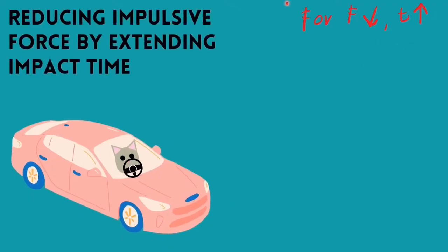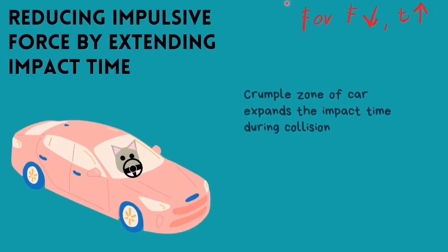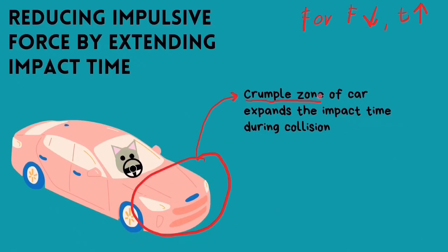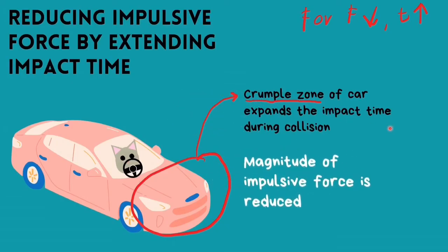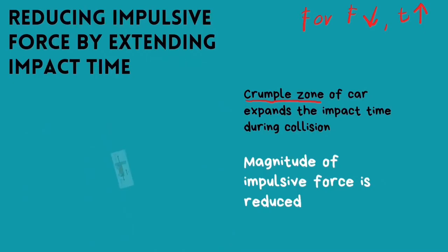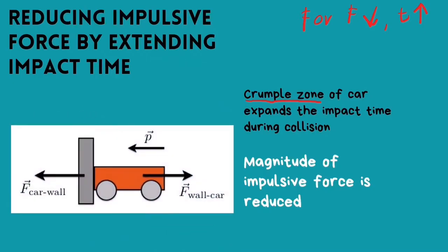Let's look at reducing impulsive force by extending the impact time. The crumple zone of a car extends the impact time during a collision — this right here would be the crumple zone. Therefore, the magnitude of impulsive force is reduced if the car gets into a collision. There are also action and reaction pairs happening on the car, which can be shown in this picture.